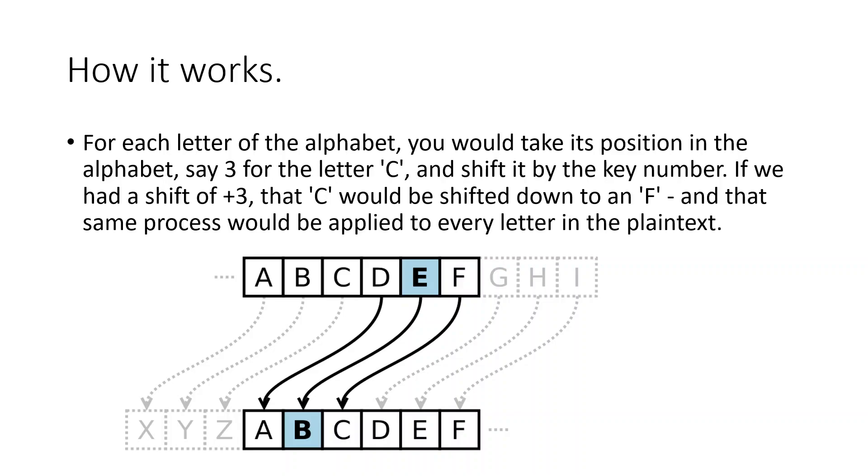For example, the letter C, if the shift was plus 3 or the key number was plus 3, then C would be shifted down to F. And this process would be applied to every letter in the plain text to convert it into cipher text.